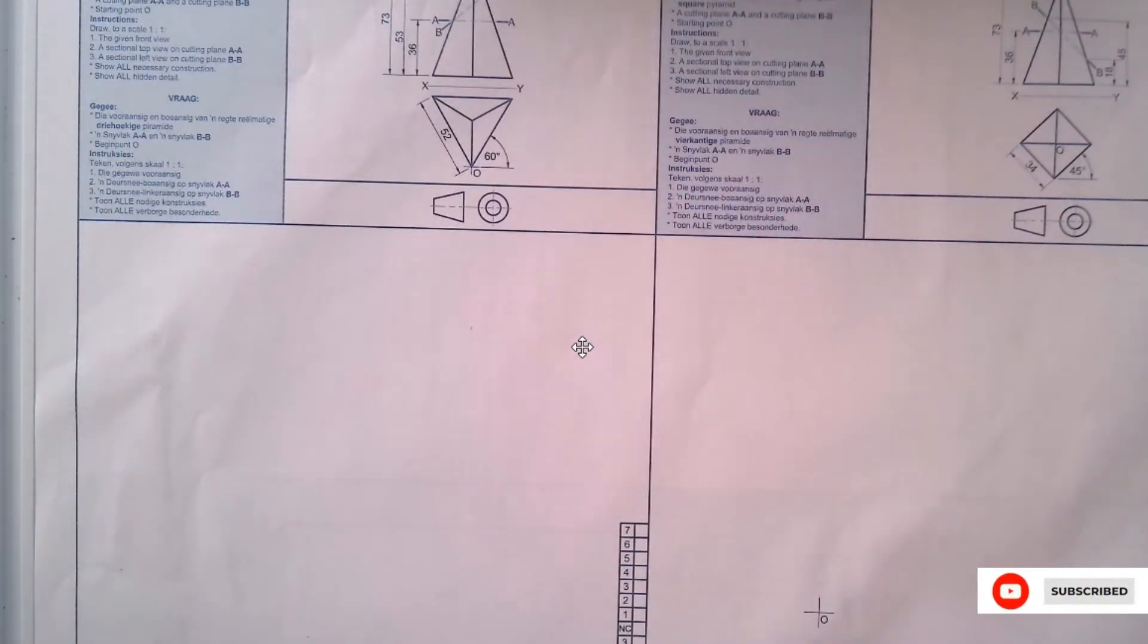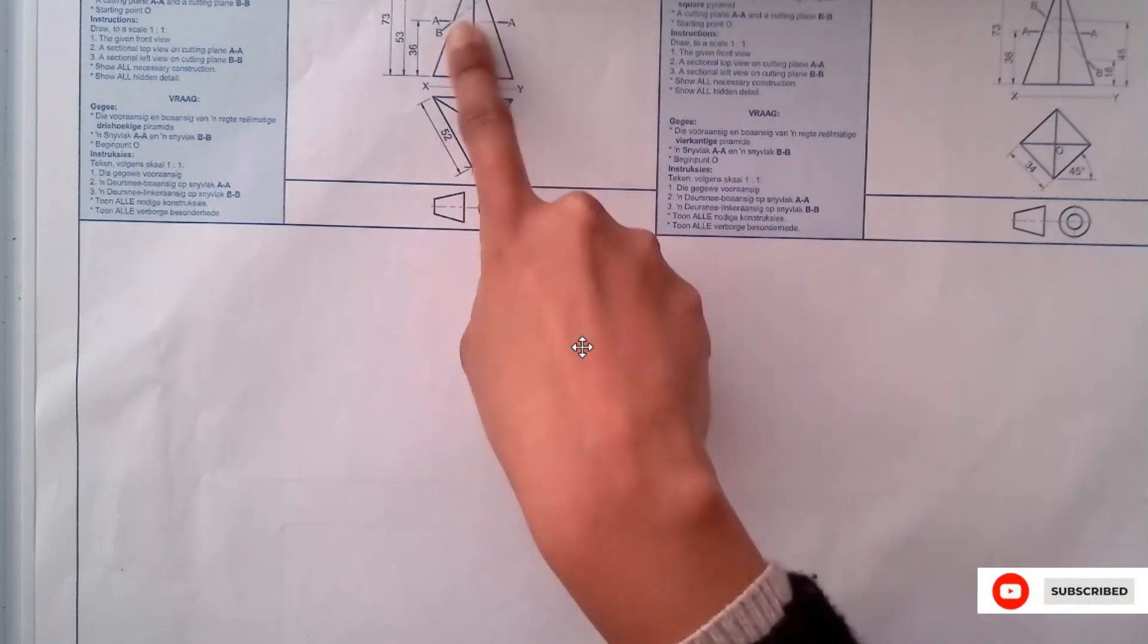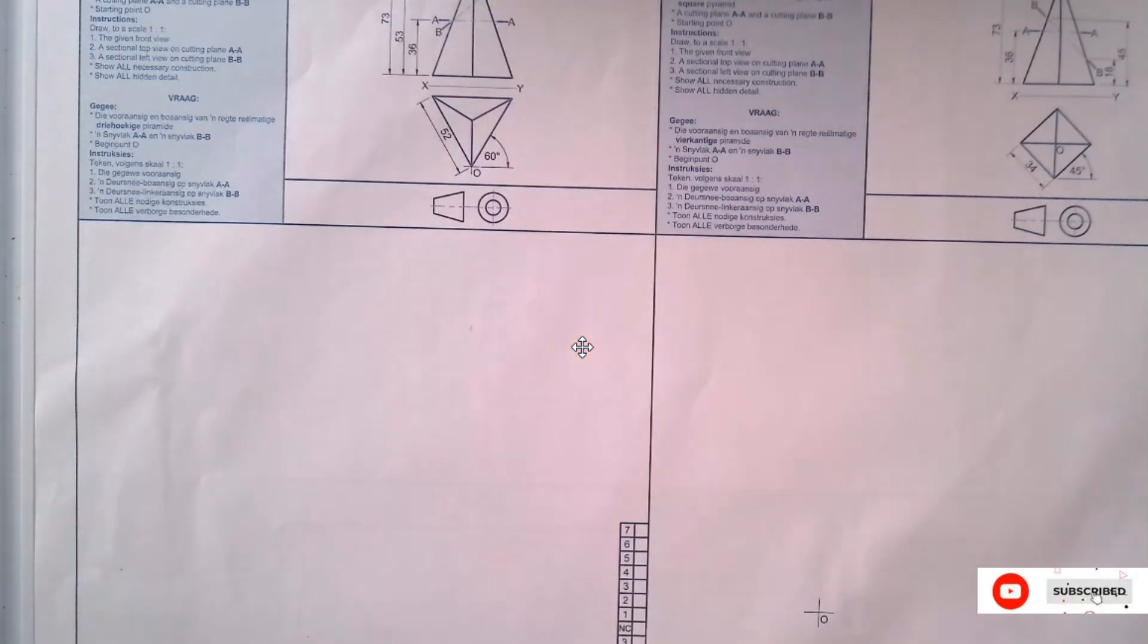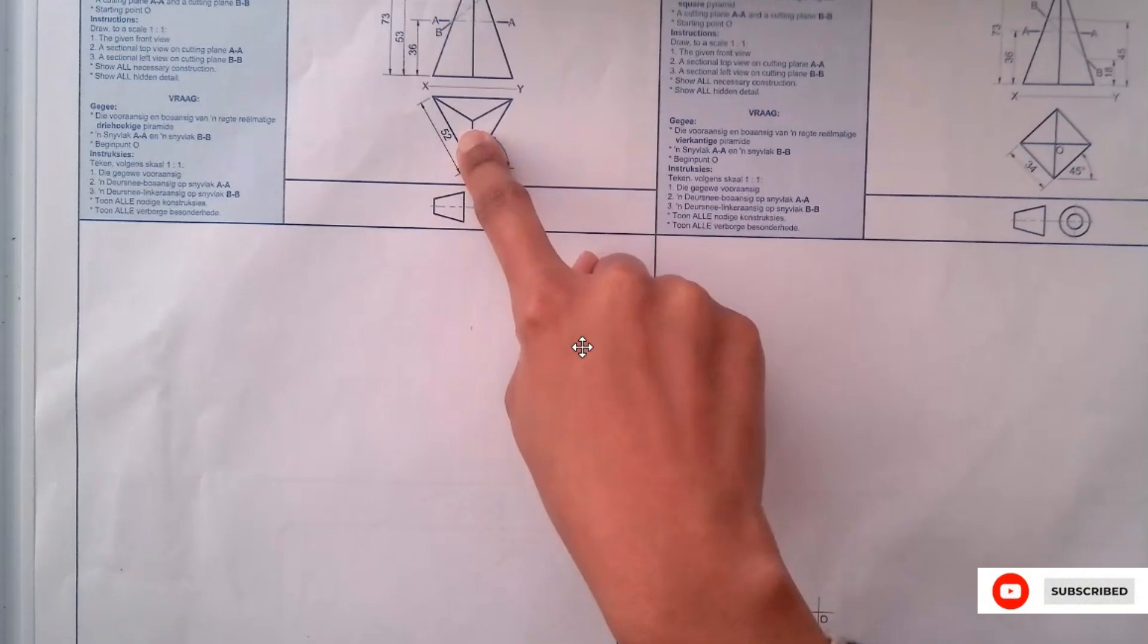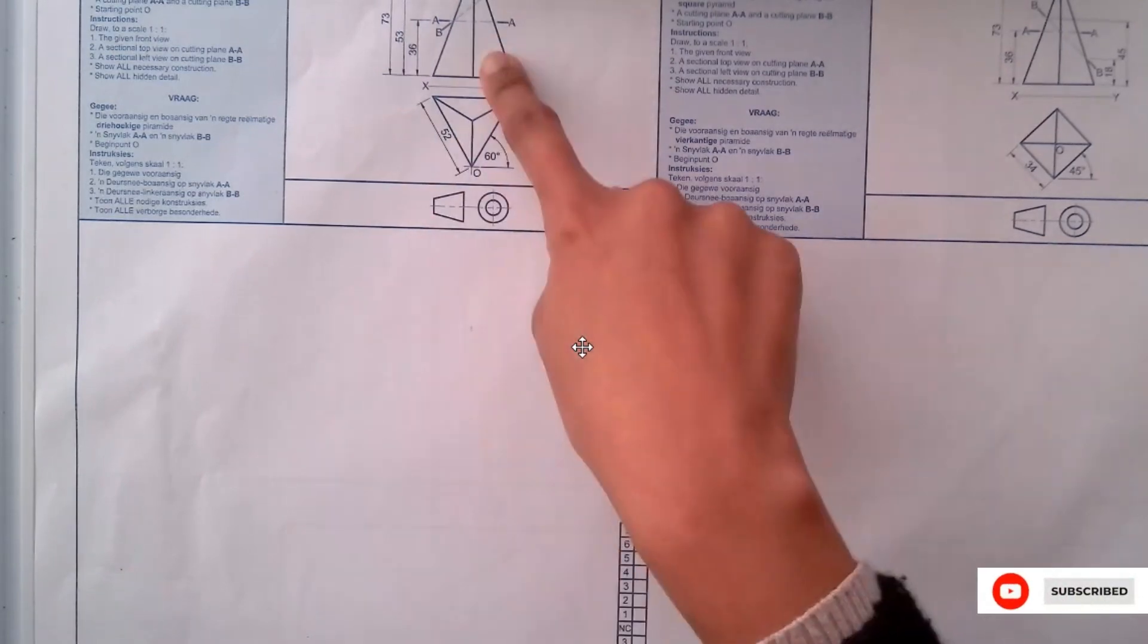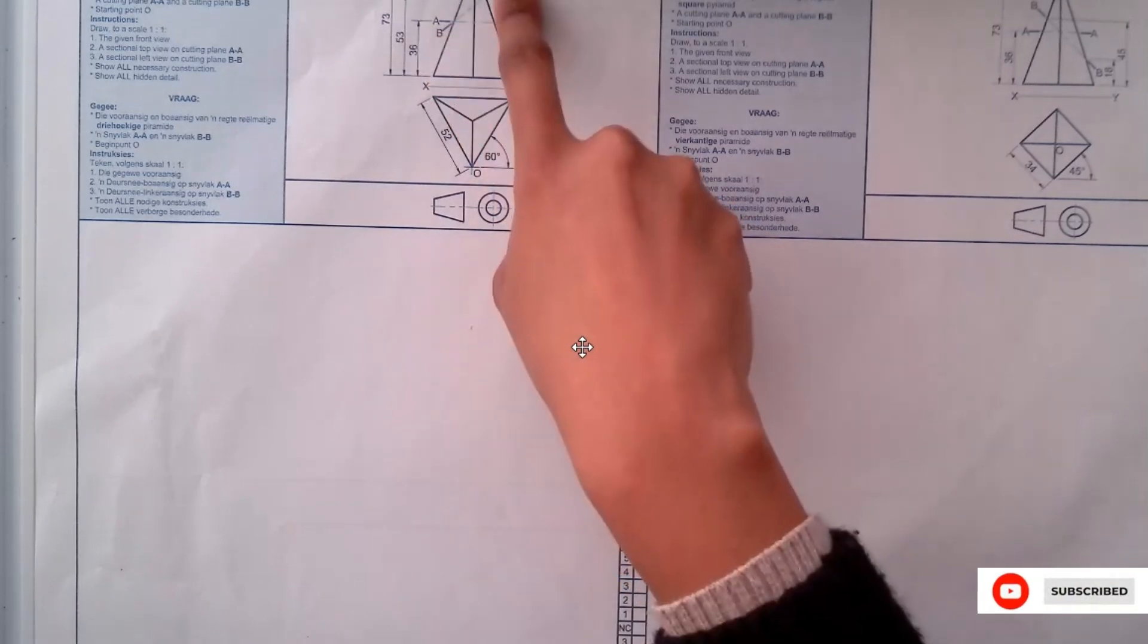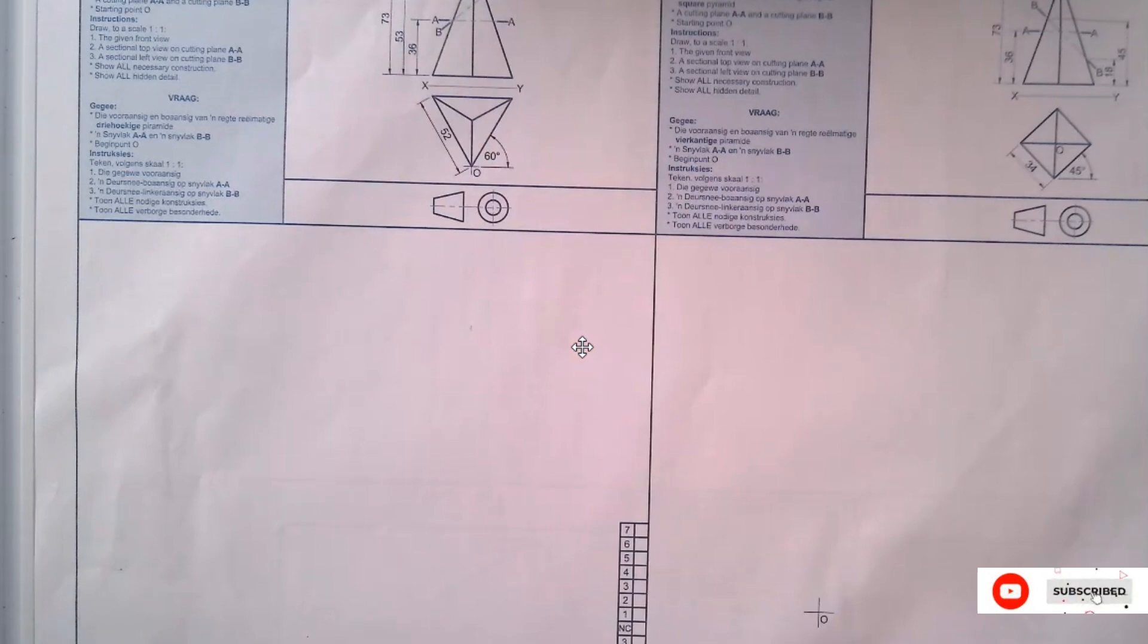Welcome to this video. We will be doing page 79. We are given the top view, the front view with two cutting planes, and this shape is a triangular pyramid. We are requested to draw the given front view with the cutting planes AA and BB as well as the sectional top view and sectional left view.